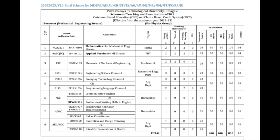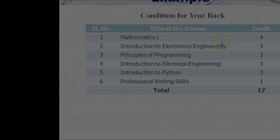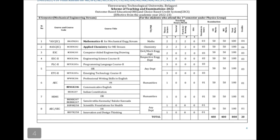In the C-cycle — which may be in the second semester or first semester depending on the branch — the credits are similarly structured: Mathematics is 4, Applied Chemistry is 4, and Computer Aided Engineering Drawing is 3 credits. VTU has set up these credits for both the P-cycle and C-cycle.